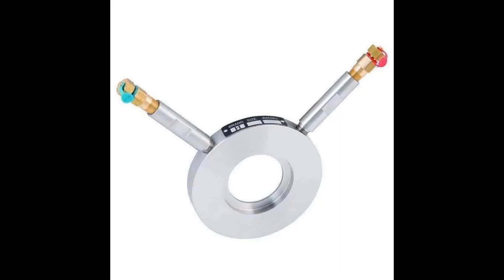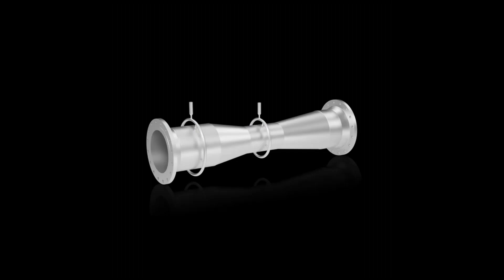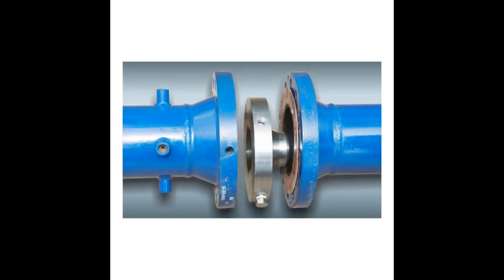The basic setup includes a primary element, typically an orifice plate, venturi tube or flow nozzle, installed in the pipeline where the flow measurement is required.